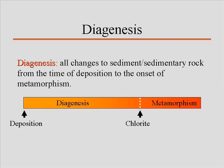Diagenesis is defined as all changes to sediment or sedimentary rock from the time of deposition to the onset of metamorphism. If rocks do not get metamorphosed, this means diagenesis can cover the entire history of the planet. I have looked at Proterozoic and older sedimentary rocks that were never metamorphosed, and what you're looking at is a record of billions of years of time — changes that occurred to this rock numerous times.